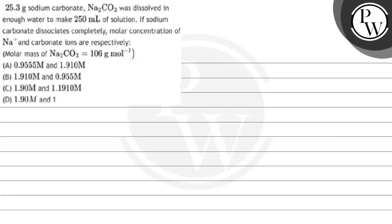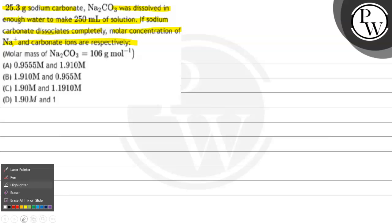Let's read this question. 25.3 grams of sodium carbonate was dissolved in enough water to make 250 mL of solution. If sodium carbonate dissociates completely, the molar concentration of Na⁺ and carbonate ions are respectively: Option A is 0.9555 M and 1.910 M; Option B is 1.910 M and 0.9555 M; Option C is 1.90 M and 1.910 M; Option D is 1.90 M and 1 M.